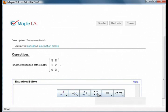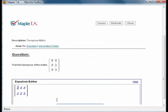You can vary more than one value in your question, set conditions on those variables, and even take advantage of randomization tools found in Maple for generating mathematical objects such as matrices, polynomials, and prime numbers.